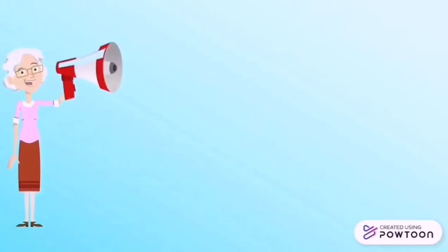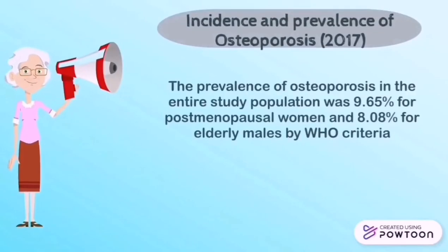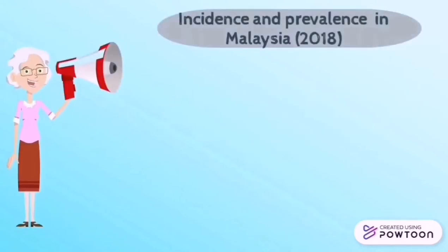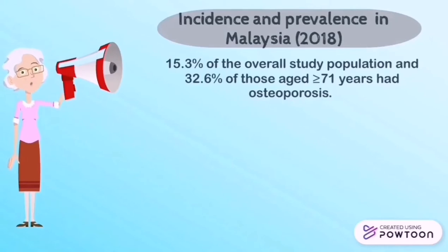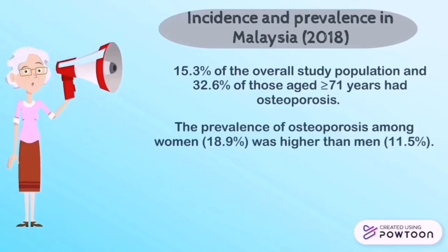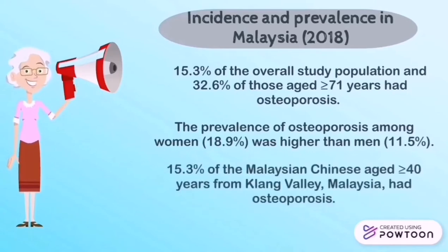The incidence and prevalence of osteoporosis: in 2017, the prevalence of osteoporosis in the entire study population was 9.65% for post-menopausal women and 8.08% for elderly males by WHO criteria. Based on a 2018 Malaysian study on prevalence and risk factors among middle-aged and elderly Chinese Malaysians, 15.3% of the overall study population and 32.6% of those aged 71 years and above had osteoporosis. The prevalence among women was 18.9%, higher than men at 11.5%. Overall, 15.3% of Malaysian Chinese aged 40 years and above from Klang Valley had osteoporosis.